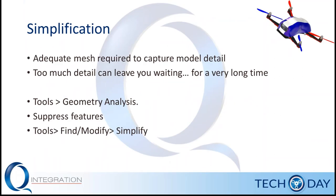In terms of geometry itself, we need an adequate mesh to capture model detail, but too much detail may leave you waiting a long time for results. Take advantage of tools like Geometry Analysis in the Tools menu to help identify very small features in the model. You can then suppress those features, or take advantage of the Simplify tool, which will automatically suppress individual small features to help simplify the model so you're not waiting for the analysis to run due to too much detail.